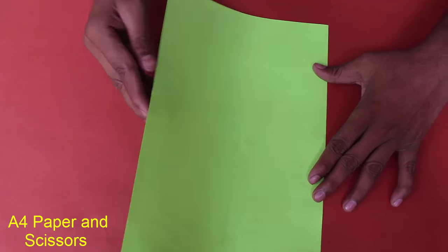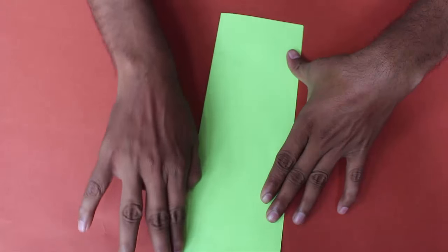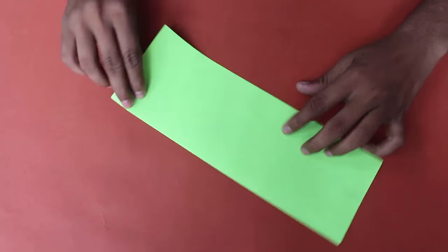To make this clapper you just need an A4 sheet and scissors. First fold the A4 sheet in half along its width.